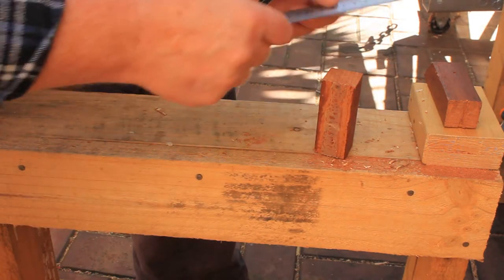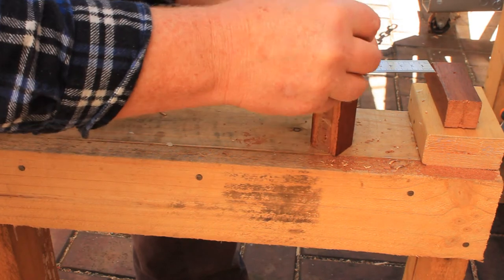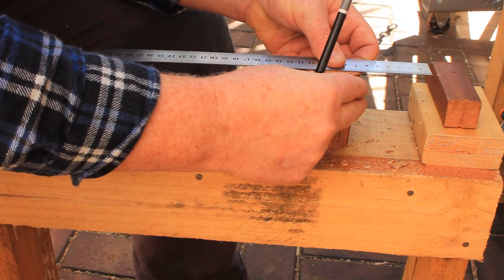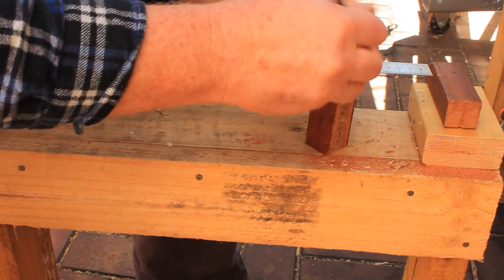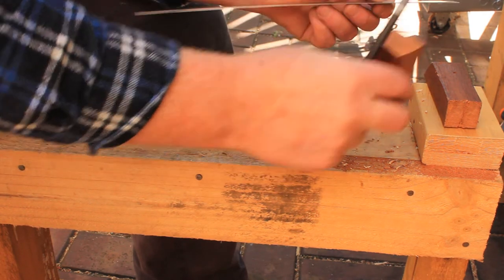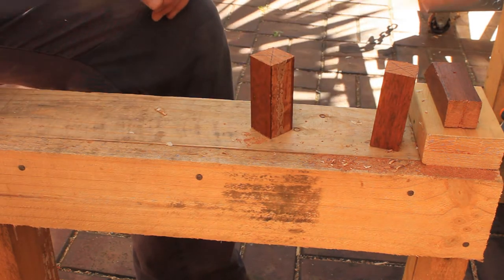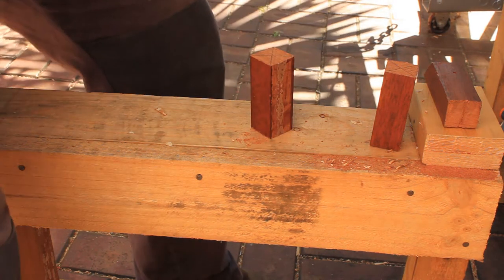Next draw diagonal lines across the handle pieces to mark their centers. Unfortunately we can't use the jig to drill these so just do the best you can.